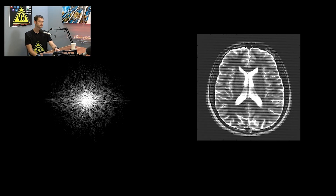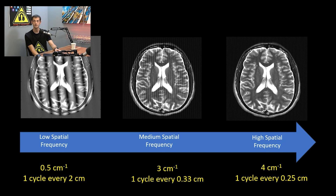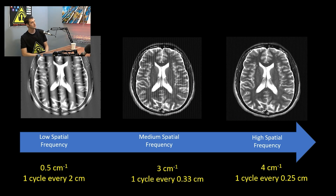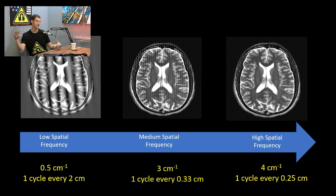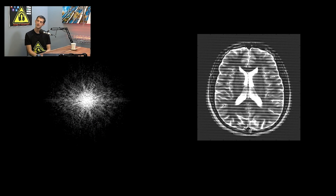What parameter would you adjust to make that happen? That's your matrix size — your spatial resolution. As you increase the matrix size, you're normally thinking about adding more image pixels, but on the acquisition side you're actually adding more k-space encoding positions. As k-space gets bigger, you're capturing higher and higher spatial frequencies.